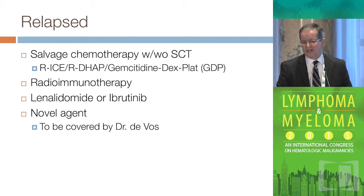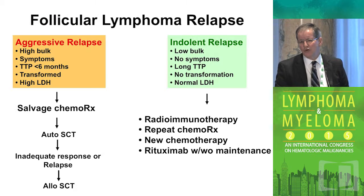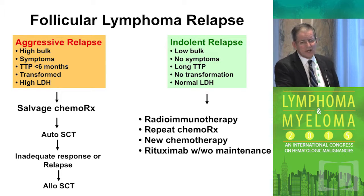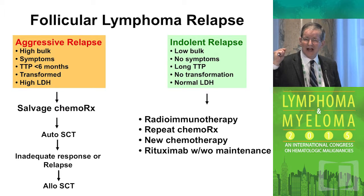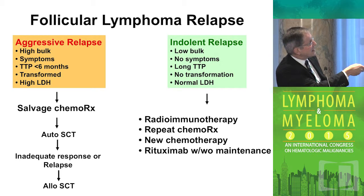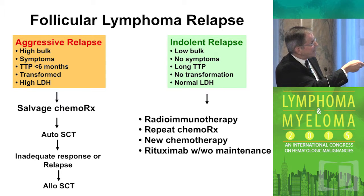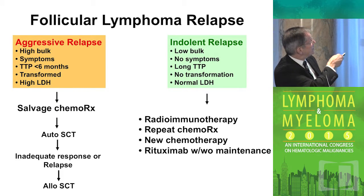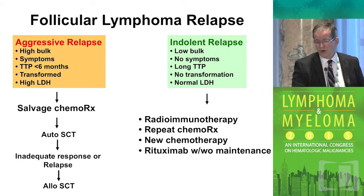For the relapse population, this is where you individualize treatment. You have to think about what you gave them the first time and how long the response lasted. For an indolent relapse — low bulk, no symptoms, long time to progression, no transformation, normal LDH — FDA-approved Zevalin is a great option. You could also repeat the same chemo if it worked well, give protocol therapy, or simply give Rituxan. If the patient appears to be transforming, re-biopsy and consider salvage therapy followed by transplant.